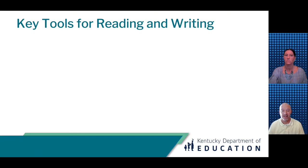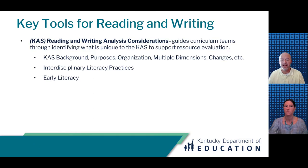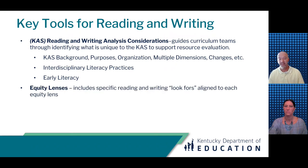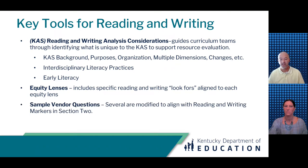The three key tools represented on this slide align to focus areas where districts and schools will likely need significant support. The reading and writing analysis considerations support deep analysis of the CAS to help make sure all embedded in and around the standards get due consideration as a shared understanding is created, helping to assure places potentially overlooked get seen. The equity lenses offer five lenses a reading and writing curriculum team can evaluate a resource through, explain what each lens entails, and connect it directly to reading and writing. The sample vendor questions were created through KDE's partnership with Achievement Network and offer important questions and question types curriculum teams might not think of when engaging resource vendors.